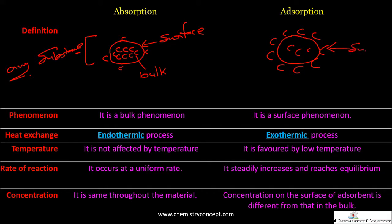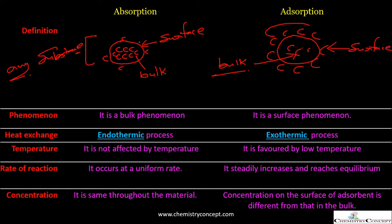In adsorption, the concentration at the surface will be more as compared to the bulk. But in absorption, the concentration in bulk will be more as compared to the concentration at the surface. So when higher concentration is on the surface and lesser in the bulk, that is adsorption. When lesser concentration is at the surface and more concentration is in the bulk, that process is known as absorption.